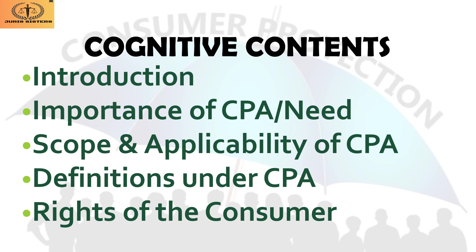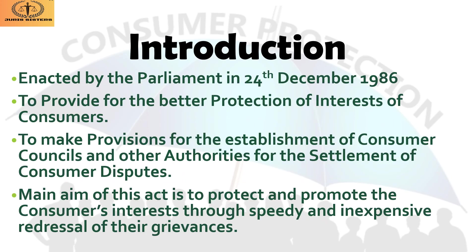This first part mainly focuses on five important things of the Consumer Protection Act 1986: first, the introduction covering what is consumer protection; second, the importance and need for the act; third, the wide scope and applicability; fourth, the 10 important definitions under the act; and fifth, the rights available to consumers.